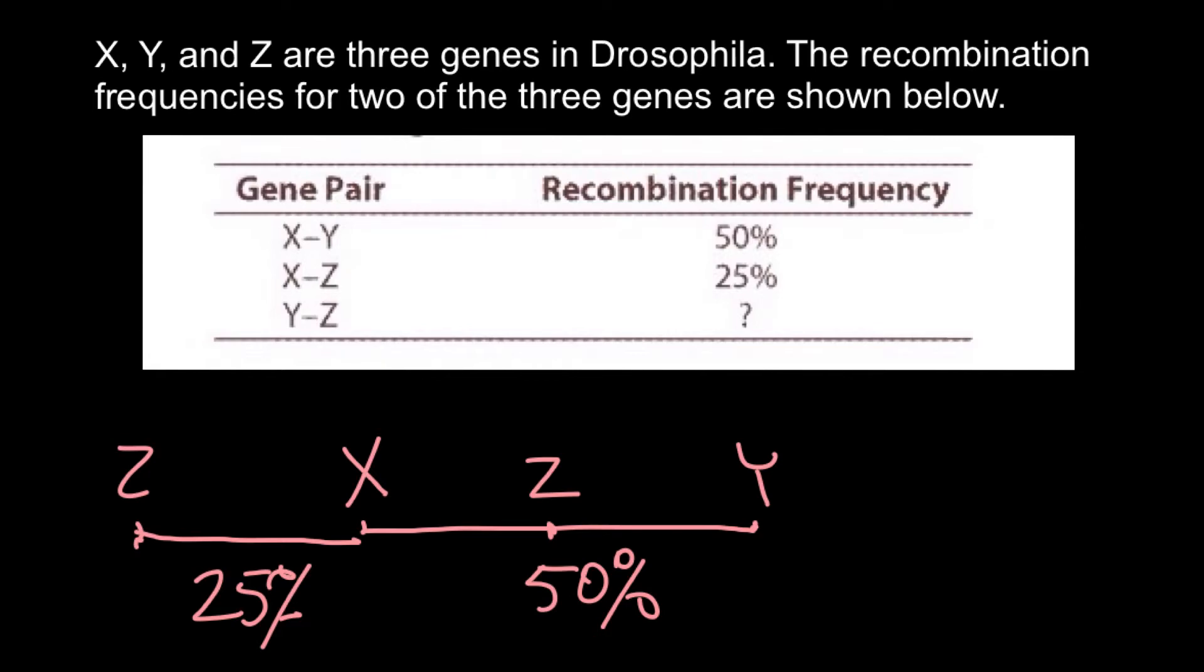Where we are going to put gene Z, whether in this position or in this position? In both variants we would have 25% recombination frequency. So should our answer be that between Z and Y we have to expect recombination frequency of being 25%? Or should we say that recombination frequency have to be 75%?